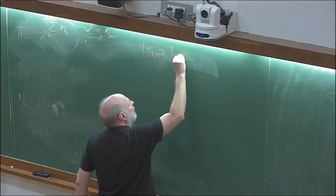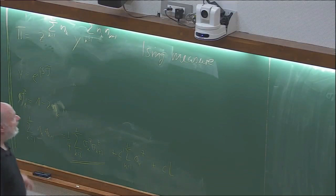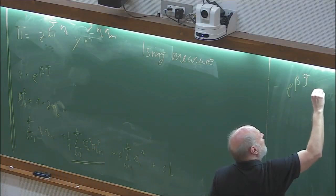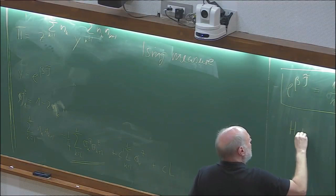If you take exp(eta * J-tilde) = (1+epsilon)/(1-epsilon), you will find that H pi is zero—it is stationary. You will find this works, and I just want to give you the result without writing down all details.